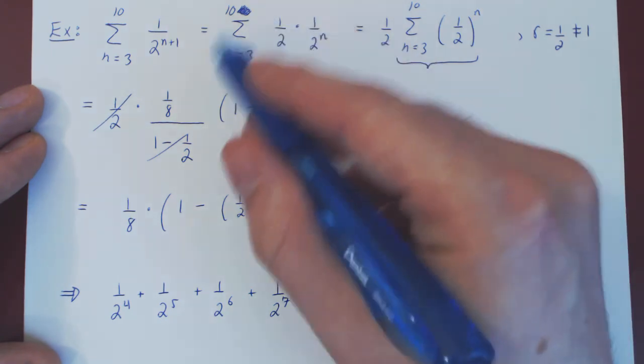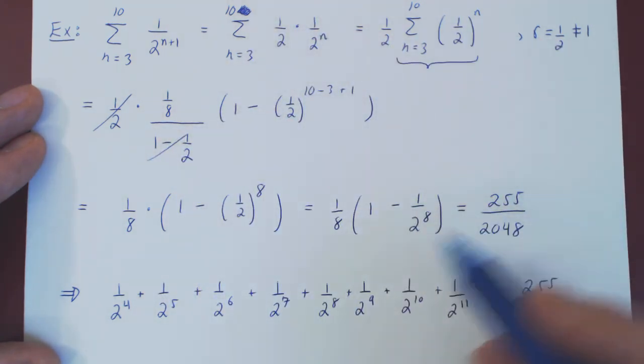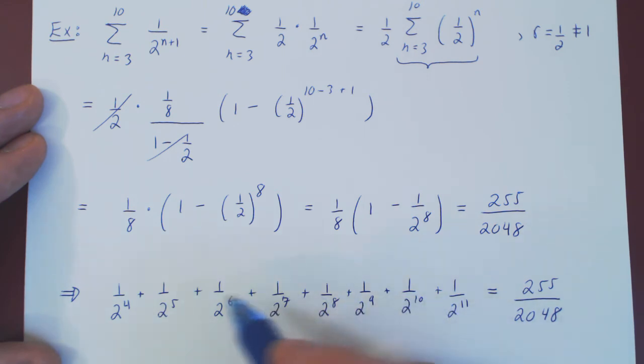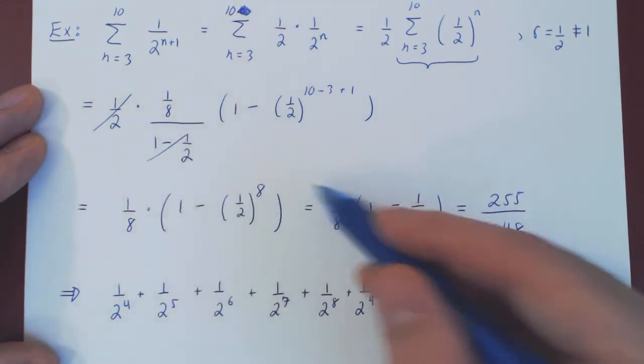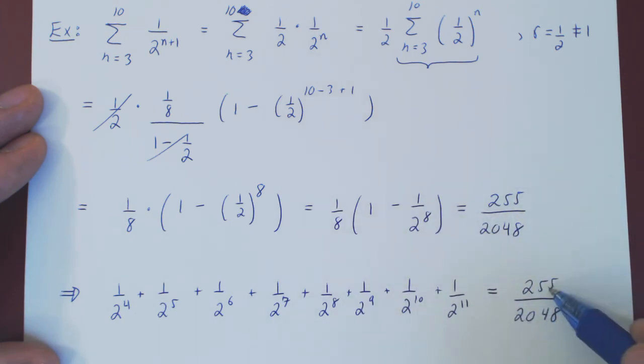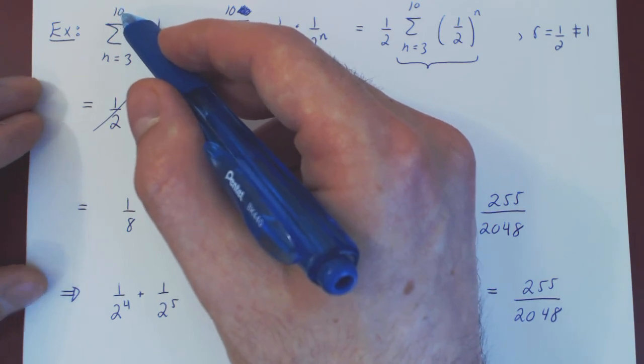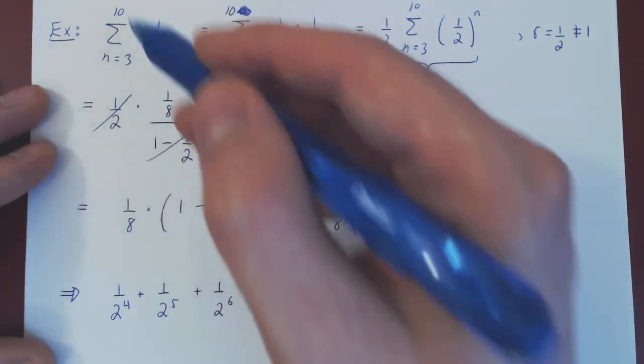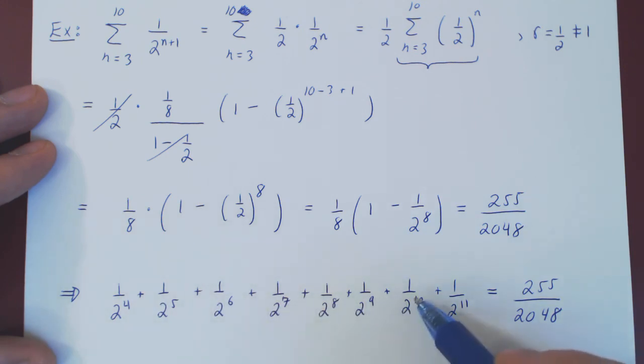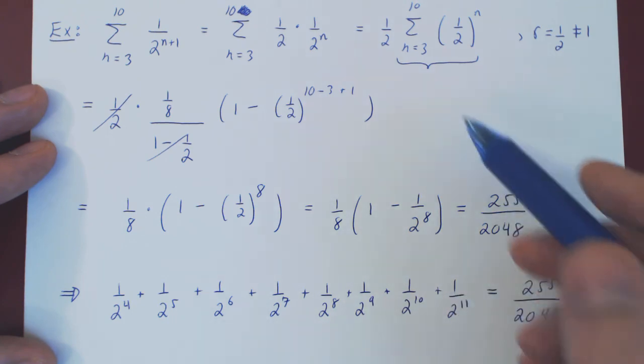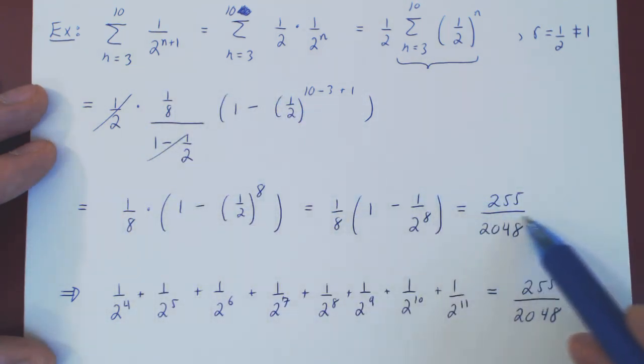Now you could have, of course, skipped all this, as we're only adding up 8 terms. So you could have added those terms directly, without the formula, and it would have been not much more work. But what if, instead of going up to 10, we went up to 10,000? Then you wouldn't want to add up over 10,000, or roughly 10,000 numbers of this form. That would take up way too much time. And then the formula gives you an incredible shortcut. And that's it.